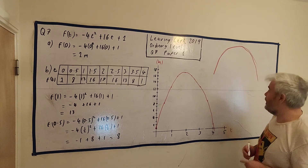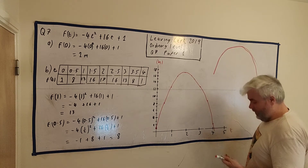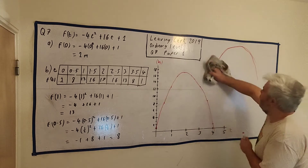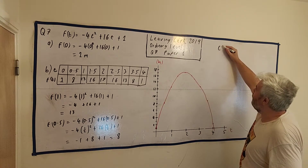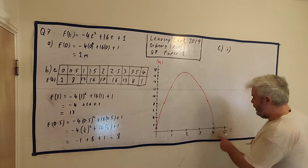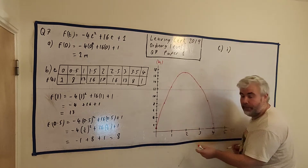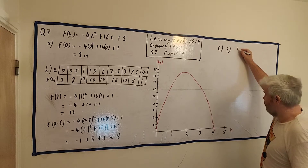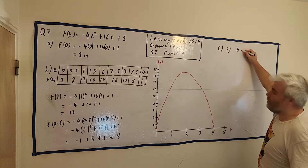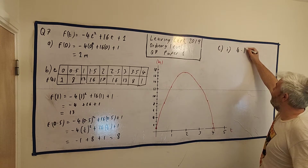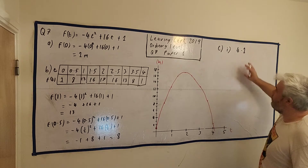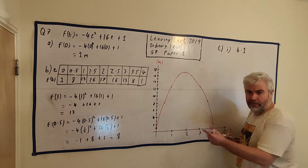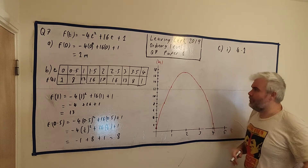Remember it was hit one meter above the ground and it lands on the ground. So what time would that be? C part one would be the total time it was in the air. For my drawing it's about — well I know the correct answer, I've looked it up — it's about 4.1. And that is the correct answer given in the marking scheme.